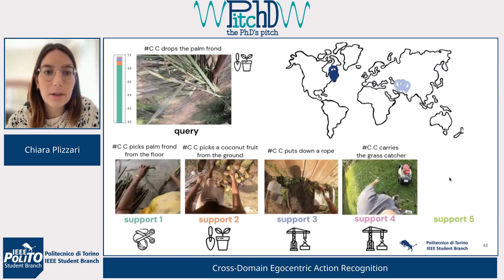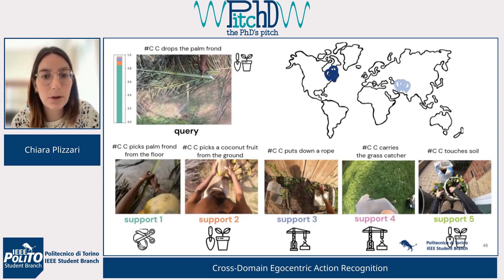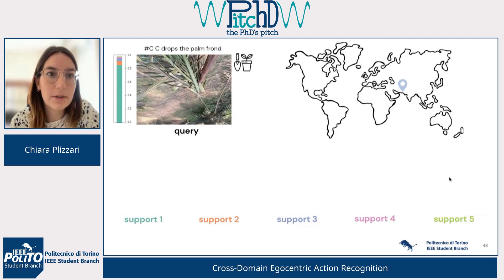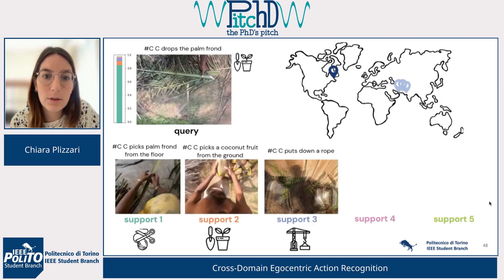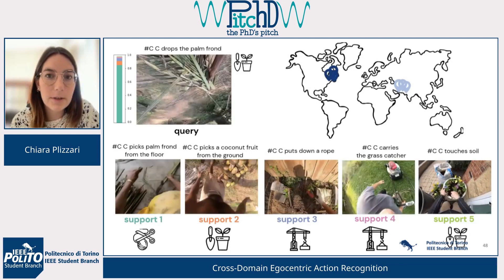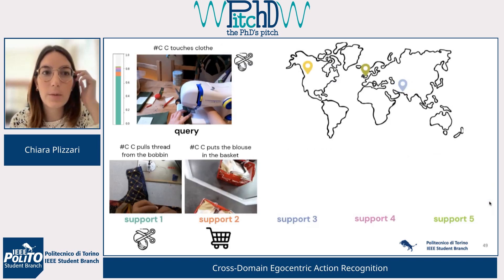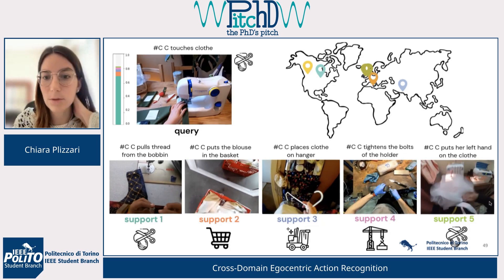Here are different qualitative examples. On the top left you can see the query video and on the bottom the top five videos used for reconstruction from the support set. For example, someone dropping a palm frond has reconstructions from videos from different scenarios and locations that still contain the same semantics. The same happens with someone touching cloth — the reconstructions come from different locations and scenarios but share the same semantics.